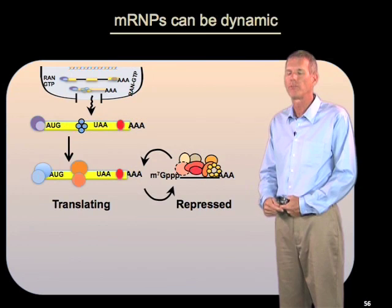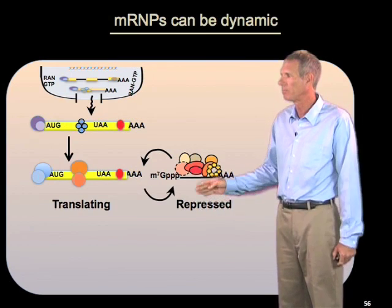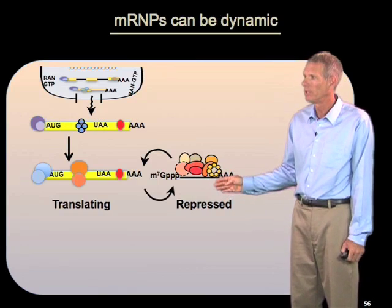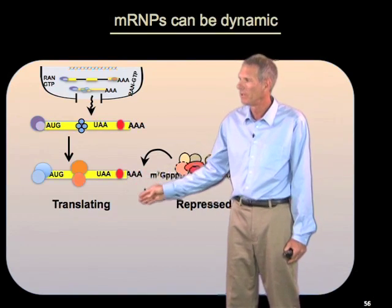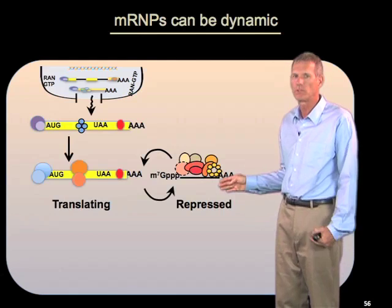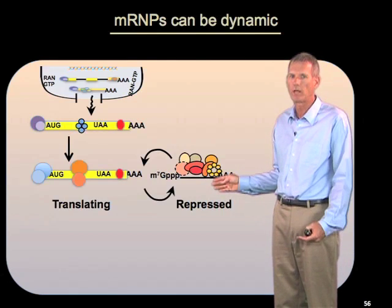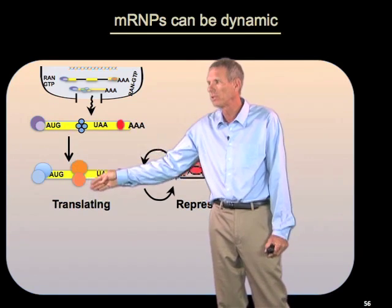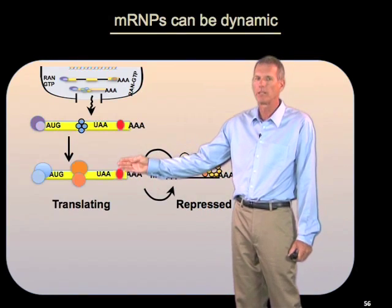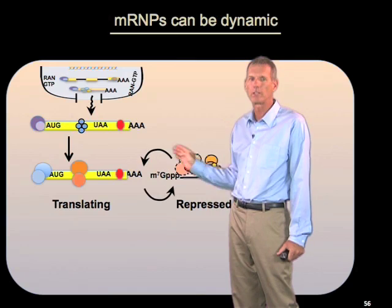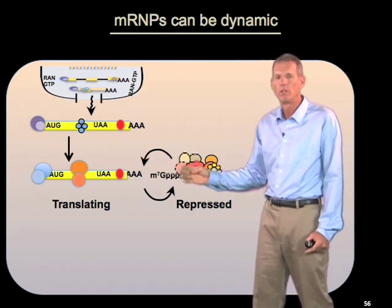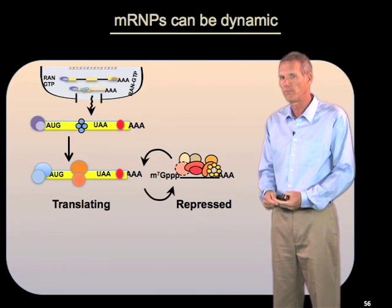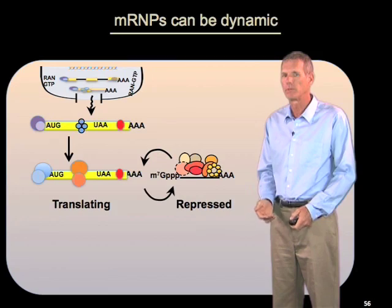Finally, mRNAs can be dynamic in ways we don't fully understand yet, involving large-scale rearrangements in the set of associated proteins. During times of stress, mRNAs can exit translation and assemble a different complex of proteins involving the translation repression complex and decapping factors. When they do that, they lose all translation factors currently on the message. These repressed mRNAs can then re-enter translation at later times, losing those factors and re-assembling a new translation complex. The mechanisms by which these large-scale rearrangements occur, and their frequency, are not yet well understood, but we know that they can occur.